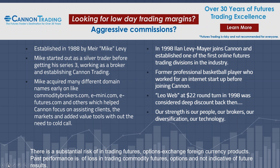I joined the business in 1998 and started establishing the online division, because my background after playing basketball was with an internet startup. In 1998, we offered a software called LeoWeb, and our commission rate was $22 a round turn plus exchange fees — we were the cheapest in the business at the time. What I consider our strength is our people, our brokers. All of us have many years of experience — some over 20 and 30 years — including brokers with floor experience. Our people, technology, and diversification are our core strengths.